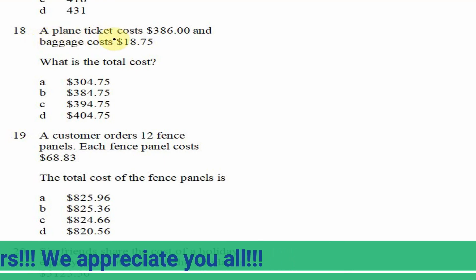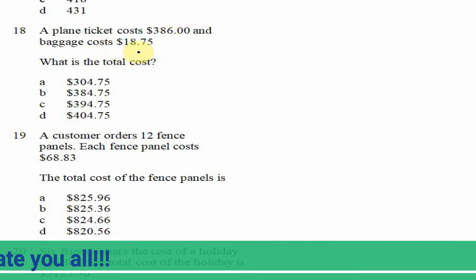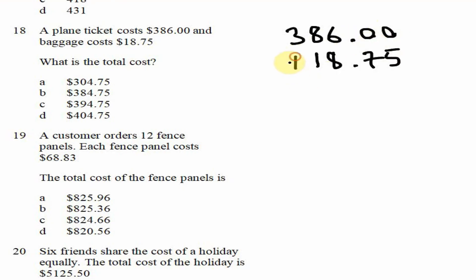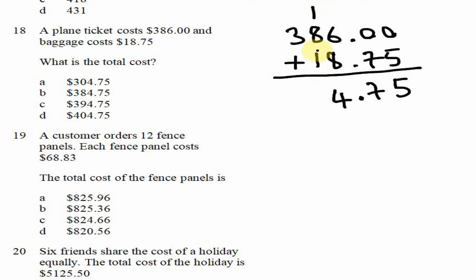Question 18: a plane ticket costs $386 and baggage costs $18.75. What is the total cost? We add 386 plus 18.75. 5 plus 0 is 5, 7 plus 0 is 7, carry back the decimal point. 8 plus 6 is 14 — write 4 carry 1. 1 plus 8 is 9, plus 1 is 10 — write 0 carry 1. 3 plus 1 is 4. The answer is $404.75, which is option D.